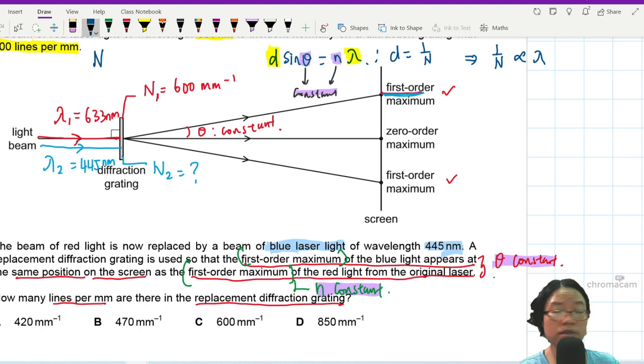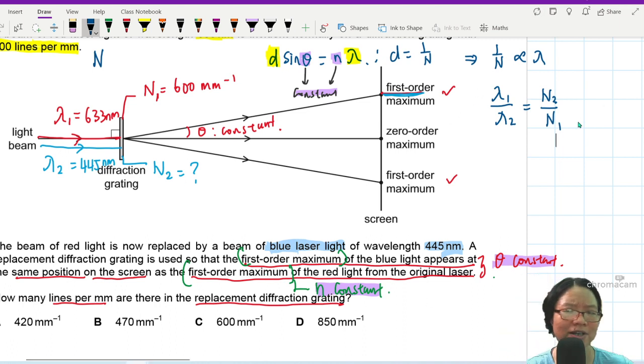So if it's inversely proportional I can just say lambda 1 over lambda 2 will be equal to N2 over N1. Ratio is your best friend. Hopefully this part is okay by now. If not, you can obviously substitute, form two equations and divide them. Do slower. So in this case I have lambda 1 which is 633 and lambda 2 which is 445. The beauty about doing ratio is that you don't need to use your prefix. Nanometer and nanometer will automatically cancel off.